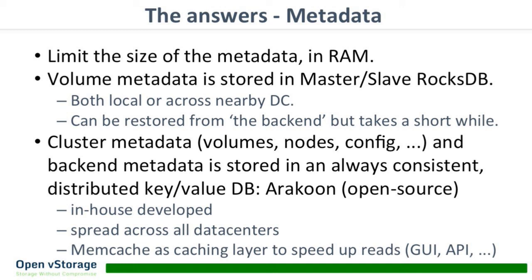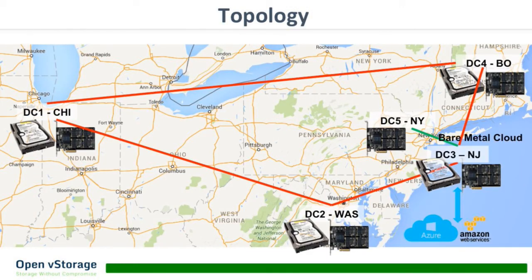The topology: we have five data centers — Chicago, Boston, New Jersey, New York, and Washington. All except New York have HDD drives forming a capacity tier ring where data is spread across data centers, so if you lose one you still have three others. All five data centers have a flash tier keeping all active data — you write something, it goes to the flash tier and then flushes to the four HDD capacity-tier data centers. We also have the possibility, for example from our New Jersey data center, to go to bare-metal clouds and similar services.